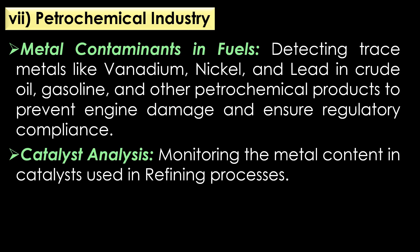Applications of atomic absorption spectroscopy in the petrochemical industry: AAS is very useful for analysis of metal contaminants in fuels and catalyst analysis. In the analysis of metal contaminants in fuels, AAS detects trace metals like vanadium, nickel, and lead in crude oil, gasoline, and other petrochemical products to prevent engine damage and ensure regulatory compliance. In catalyst analysis, AAS helps in monitoring the metal contents in catalysts used in refining processes.